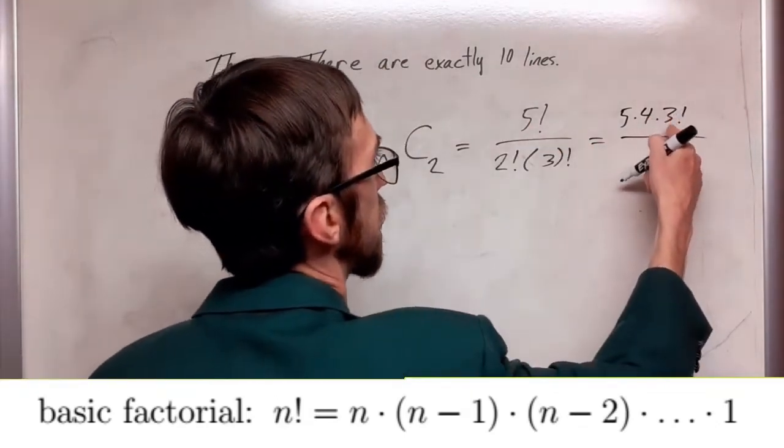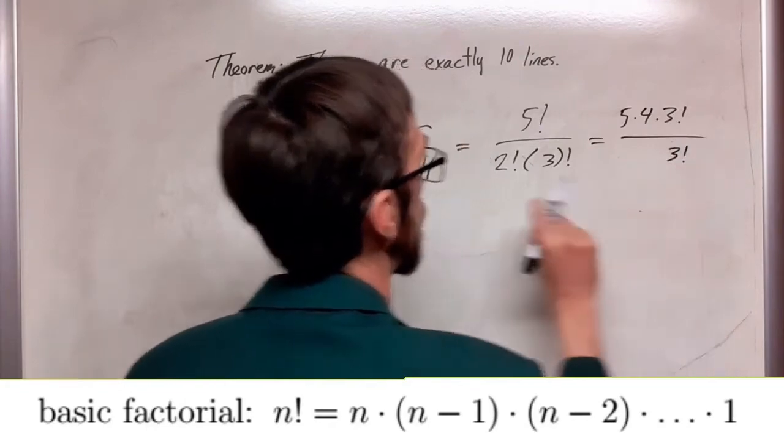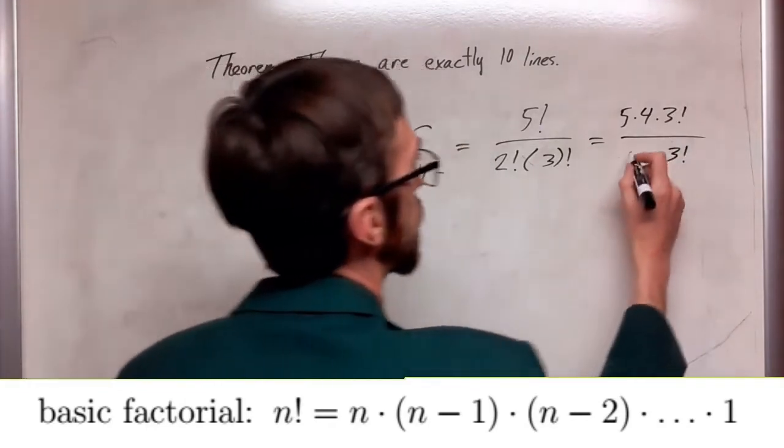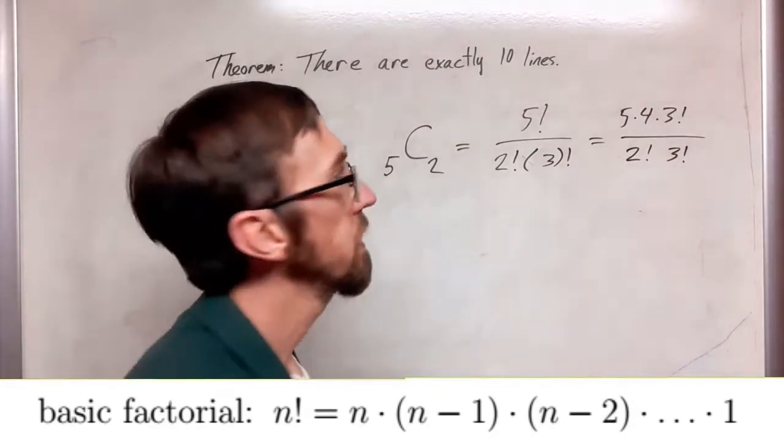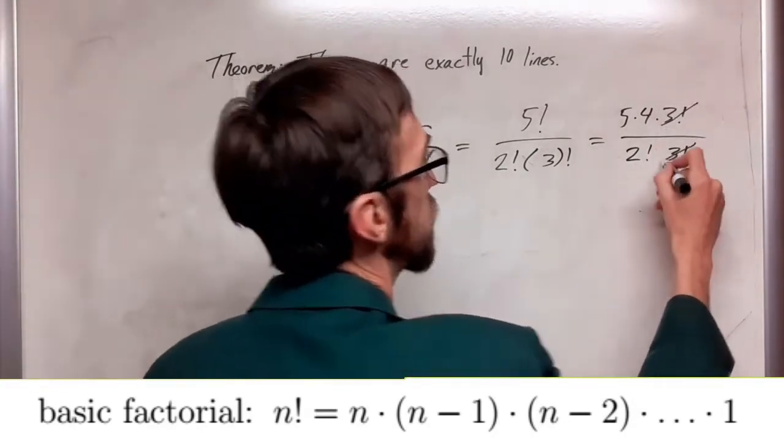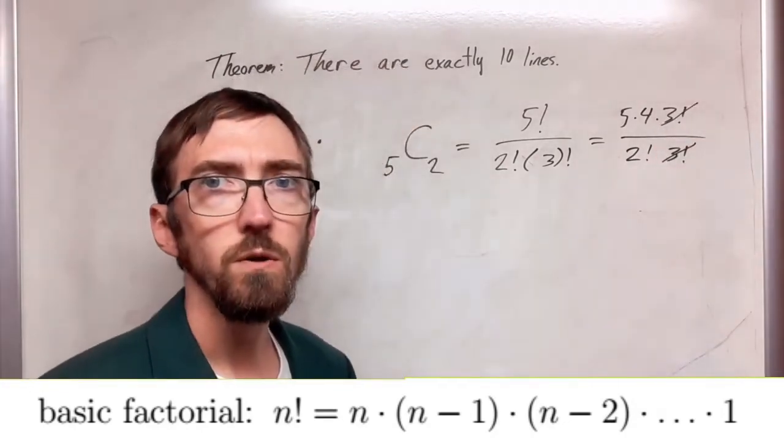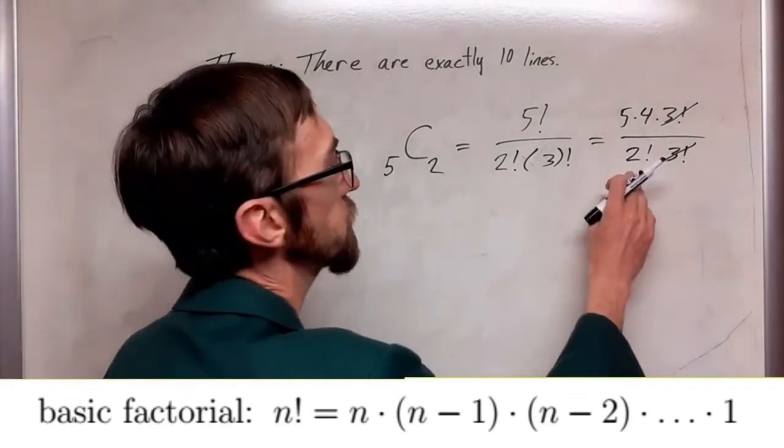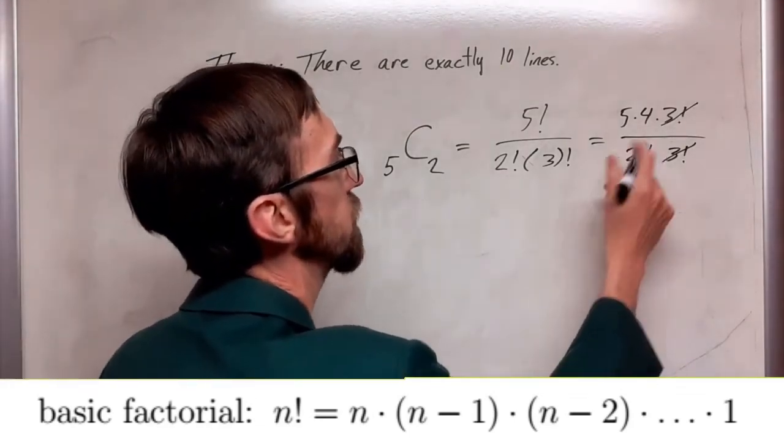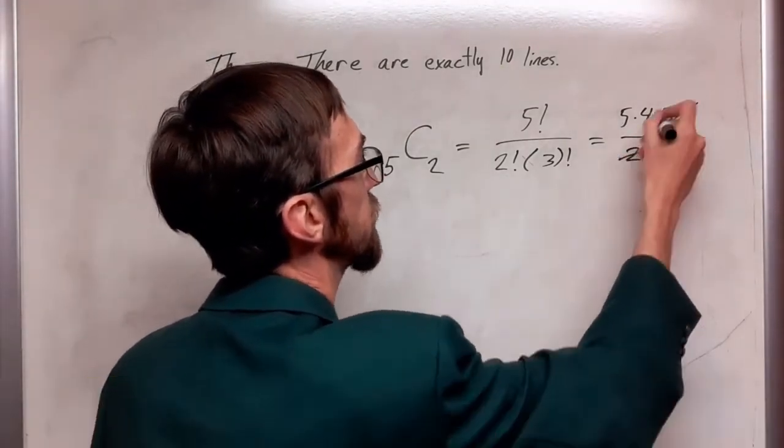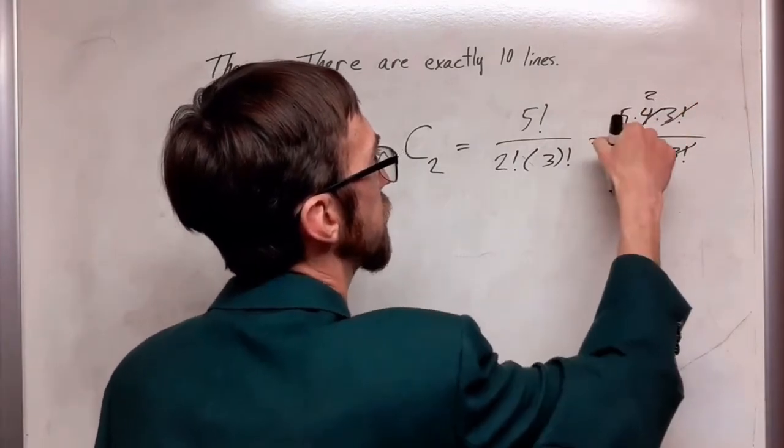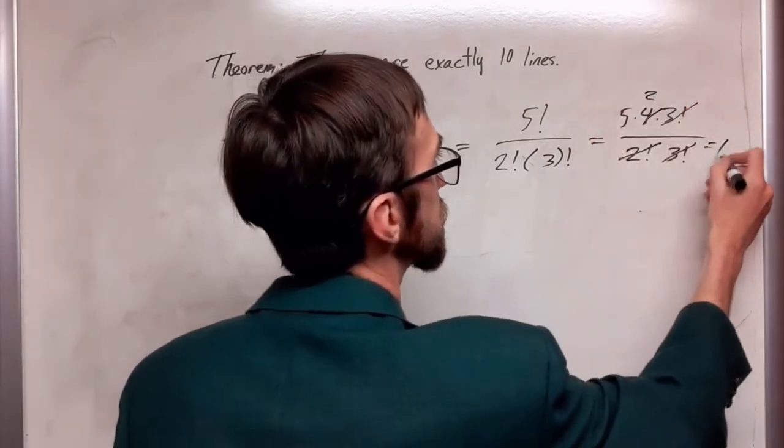And so I have this 3 factorial here. I have 3 factorial in the denominator. And I have 2 factorial here. This 3 factorial and this 3 factorial will cancel. 2 factorial is just 2. So I can take a 2 out here and a 2 out here. So I have 5 times 2 is 10.